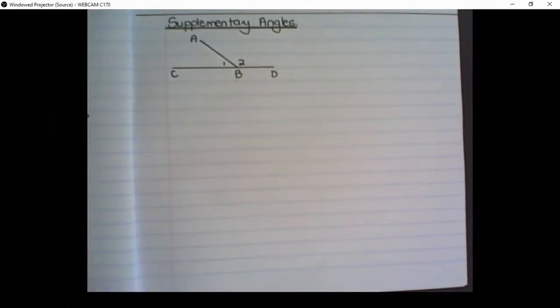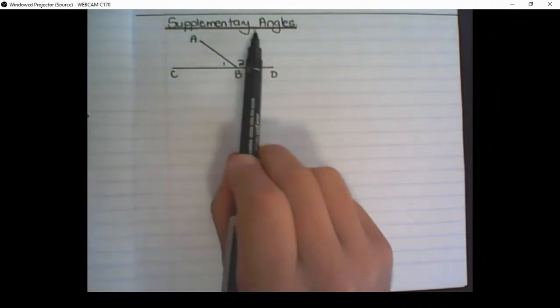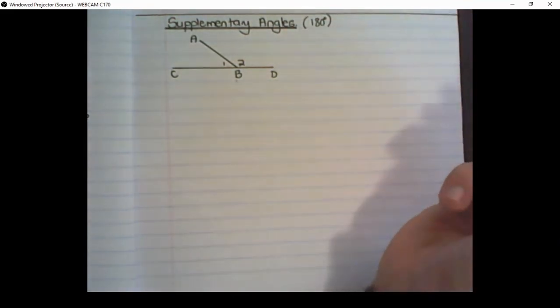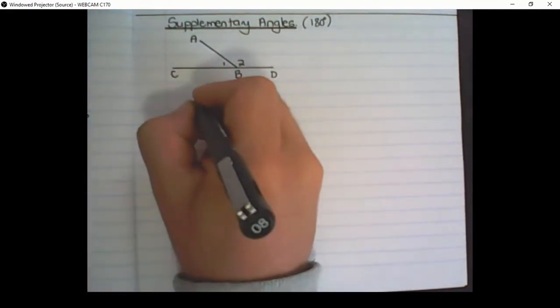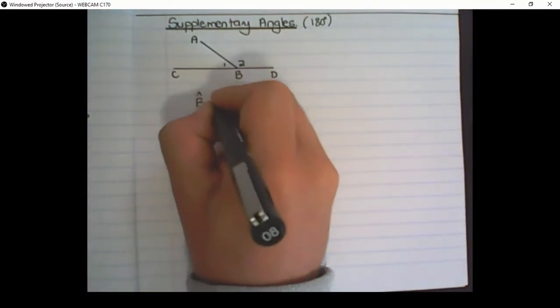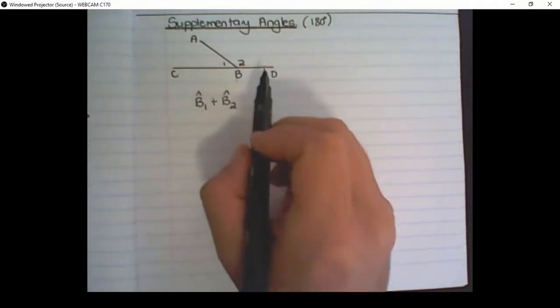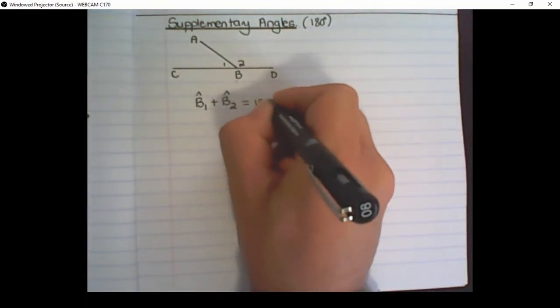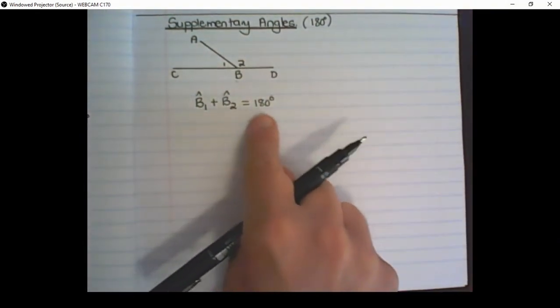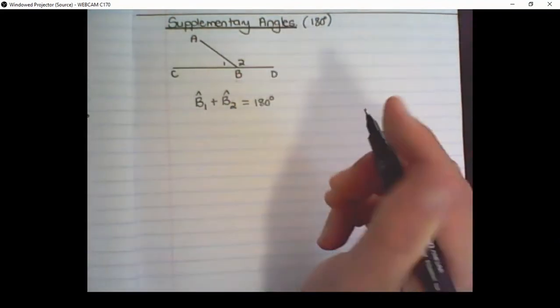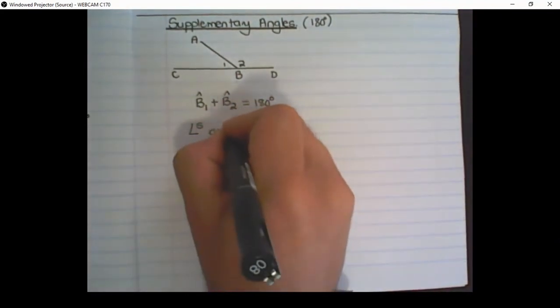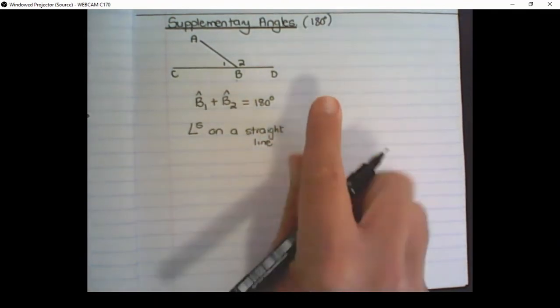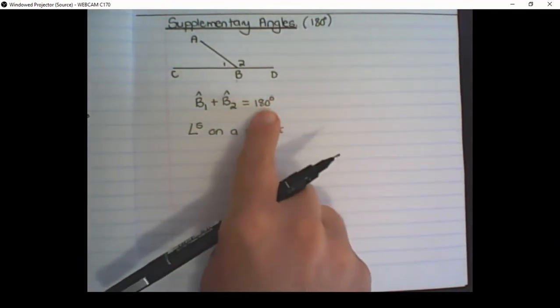The next rule that we can learn in geometry is called supplementary angles. Supplementary refers to 180 degrees. So these are angles that add up to 180 degrees. In this example, we have angle B1 plus angle B2. So B1 and B2, they are angles on this line. They are equal to 180 degrees. And the reason that we will use, we won't say supplementary angles, we would say angles on a straight line.